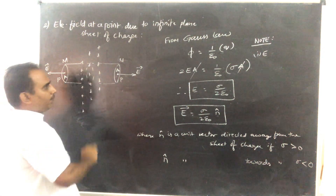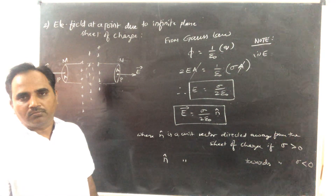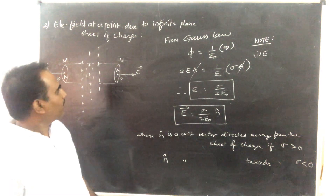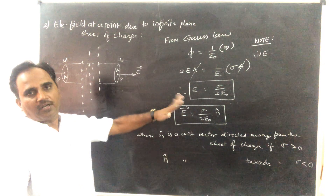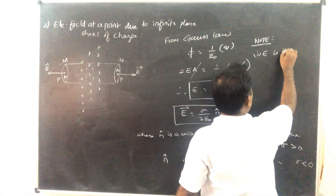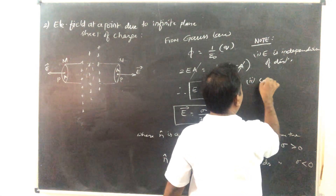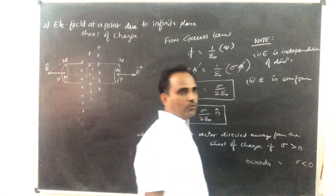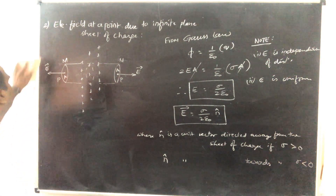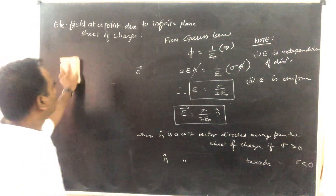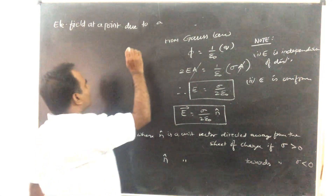Everywhere the magnitude and direction of electric field are the same — they do not vary with distance. That means due to a uniform infinitely large plane sheet of charge the electric field is uniform: E is independent of distance. This is the second application. The third application is the electric field at a point due to a charged spherical shell.